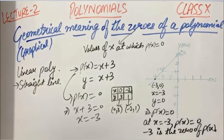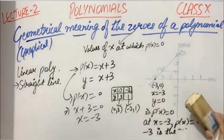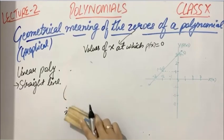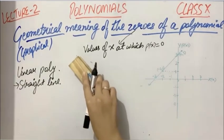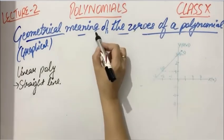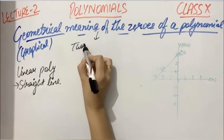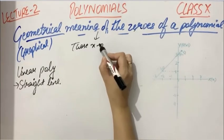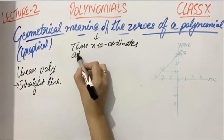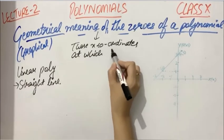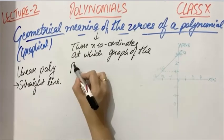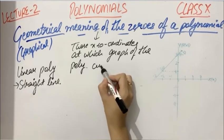So the conclusion is that at however many points the graph intersects the x-axis, that many zeros the polynomial will have. So the geometrical meaning of zeros is: zeros are those x-coordinates at which the graph of the polynomial intersects the x-axis.